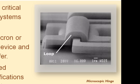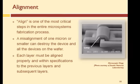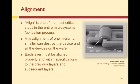Just think about the outcome of the process: if the mask for the loop was misaligned by as little as 500 nanometers, we would have a wafer full of rejected devices.